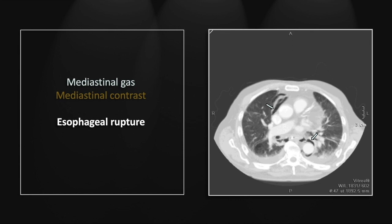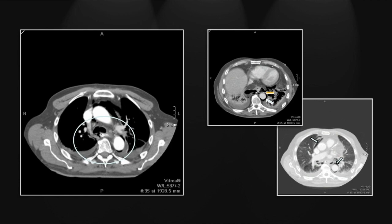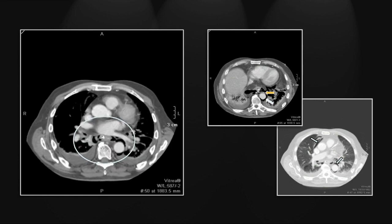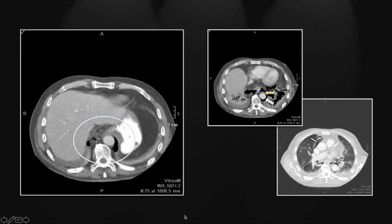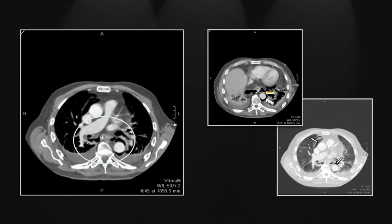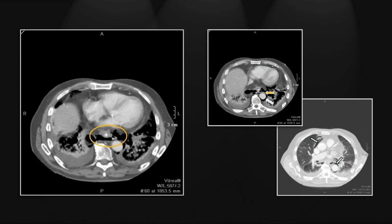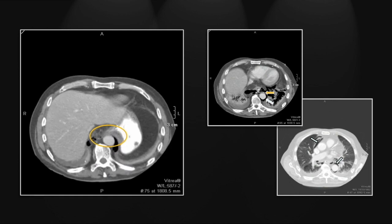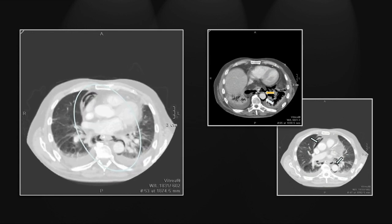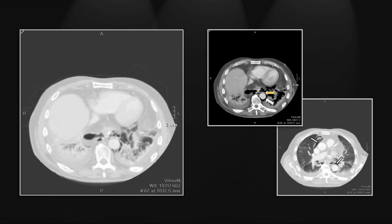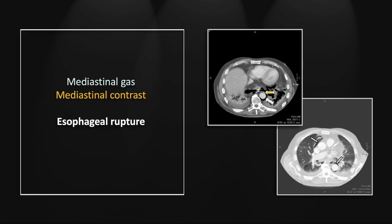And there is a lung window for better appreciation of that pneumomediastinum. Let's follow the esophagus first, noting all that gas surrounding it and outlining its outer aspect very nicely. Now let's appreciate that contrast there on the posterior aspect of the esophagus, and the extensive pneumomediastinum as seen on lung windows. So that is a case of acute esophageal rupture, or Borhoff syndrome, again associated with extensive pneumomediastinum and extravasation of contrast.